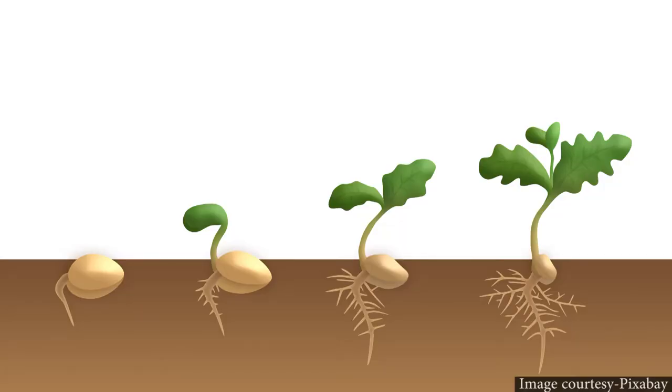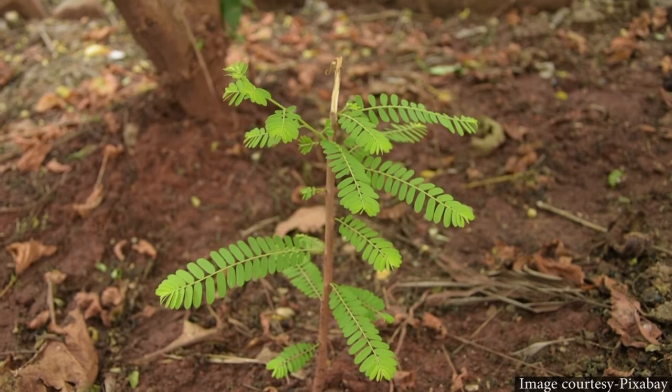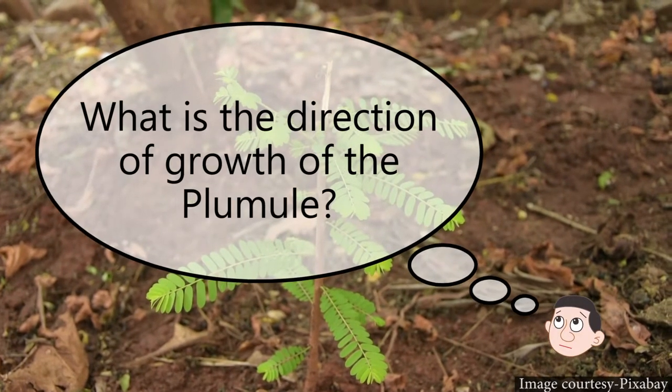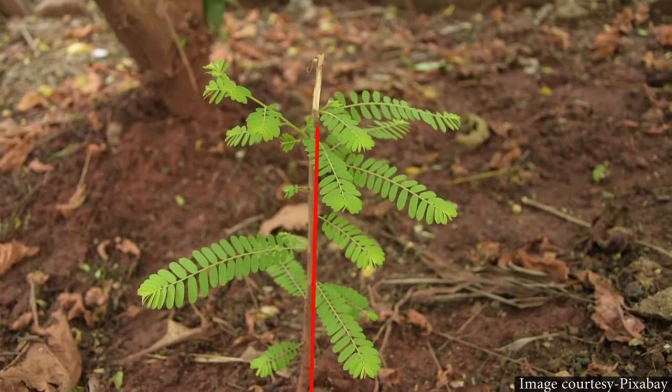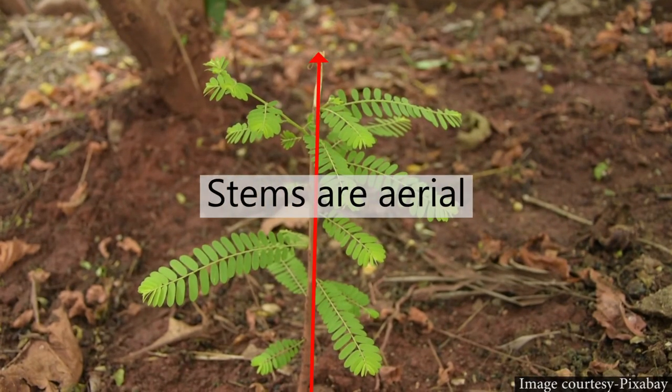We have studied root systems and root modifications in the first video. Today we will know more about the stem and its parts. In your school campus or home garden, you may collect twigs or branches of a few plants to study. Stem is produced from the plumule of a germinating seed. Usually the stem grows above the soil layer, meaning it is aerial, and it grows towards the direction of sunlight.